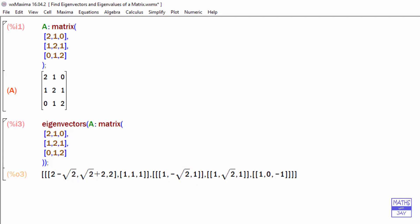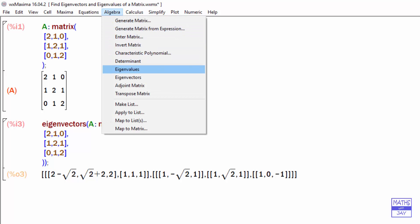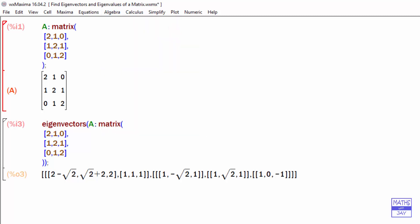So if you know that you want to find both eigenvalues and eigenvectors, there's no need to use the algebra menu to find the eigenvalues separately, because this eigenvector function finds both of these things for us anyway, both the eigenvalues and eigenvectors. So let's just write down each eigenvalue with its corresponding eigenvector.